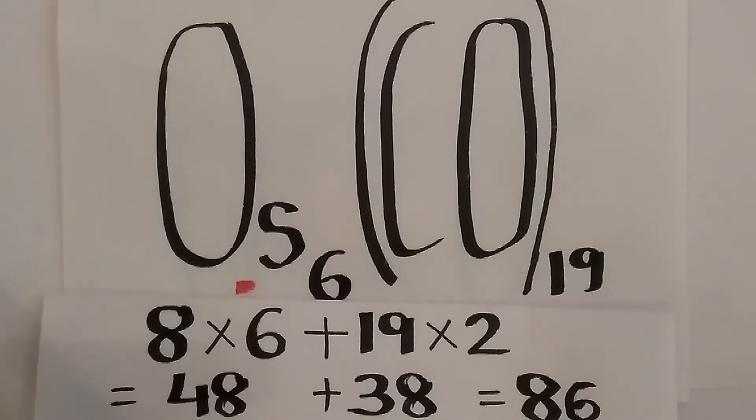Each carbonyl gives 2 valence electrons, and total we have 19 carbonyls, so 19 multiplied by 2. The total valence electron for this complex is 86.